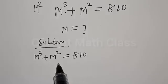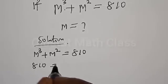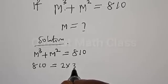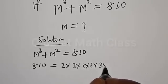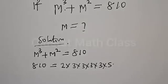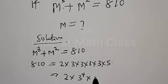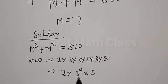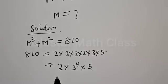We want to express 810 in the form of m³ + m². This implies that 810 is equal to 2 multiplied by 3 multiplied by 3 multiplied by 3 multiplied by 3 multiplied by 5, which gives us 2 multiplied by 3 raised to power 4 multiplied by 5. Here we have 3 raised to power 4, and 2 times 5, that is multiplied by 10.